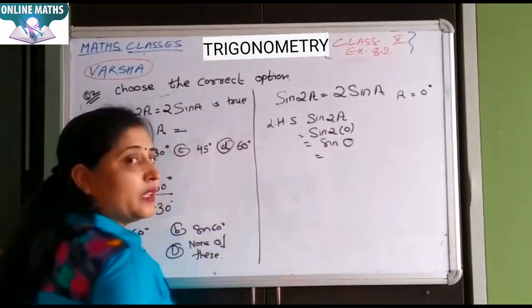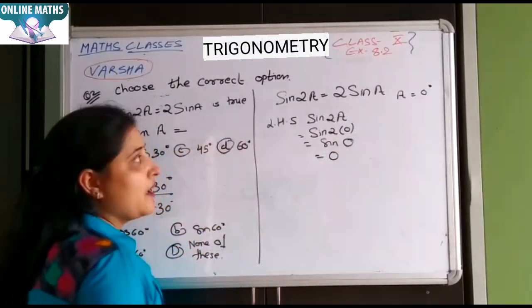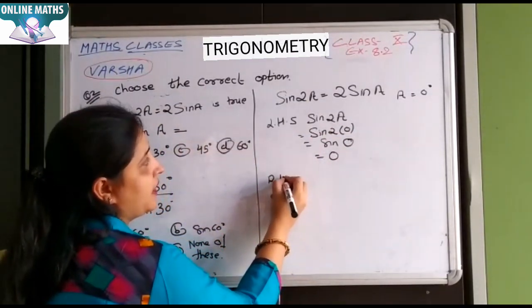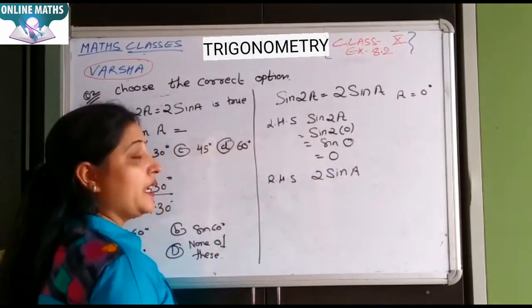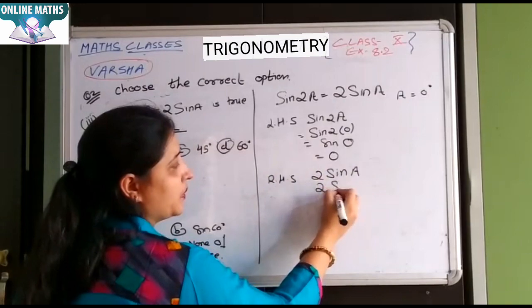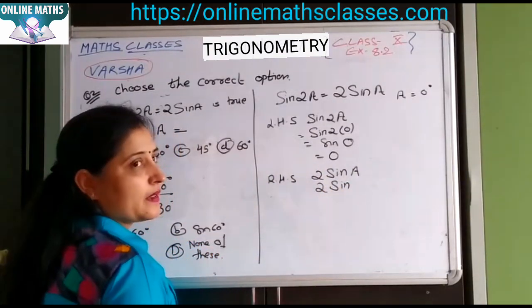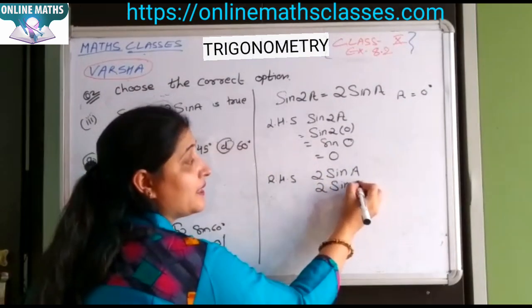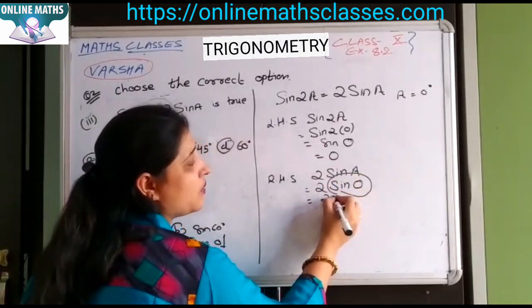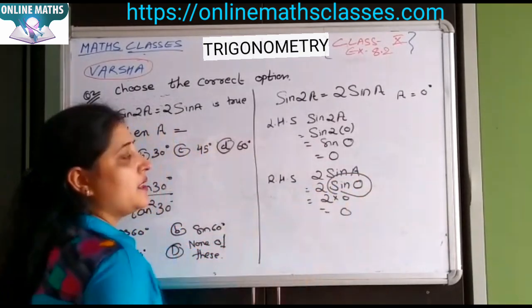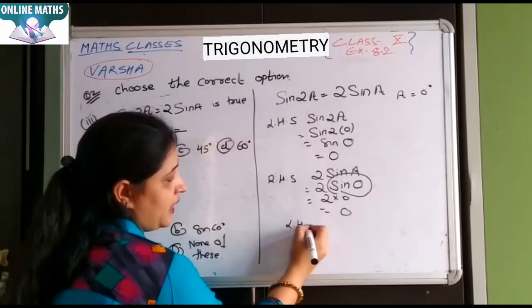So dekho sin 2A. A kitna? 0. It means kya hoga? Sine 0. Sine 0 kitna hoga? 0. Aur iska RHS aap karke dekhiye. RHS kya hai? 2 sine A. A ki jagah pe aap 0 put karoge. 2 sine 0. Sine A, A kya hai? 0. It means 2 sine 0 ki value, sine 0, it means kya hai? 0. It means LHS is equals.